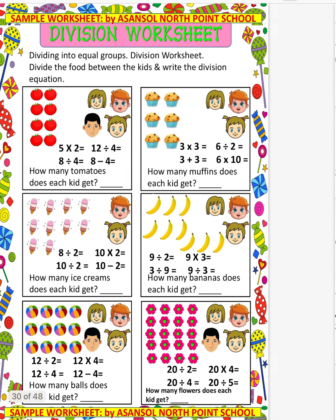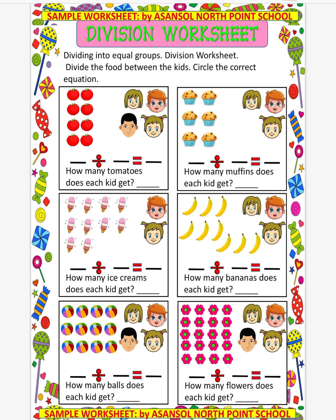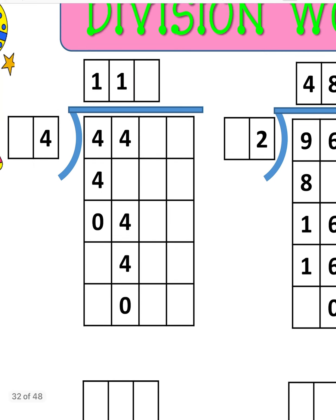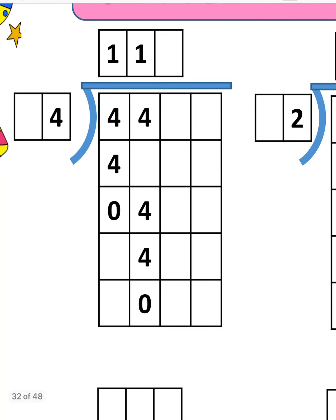Now let us discuss a few examples. We have 44 and we have to divide 44 by 4. In the table of 4, we know 4 ones are 4, so we write 4 ones are 4. We subtract 4 from 4 and get 0, then bring down the next 4. Again, 4 ones are 4. So if we divide 44 by 4, we get 11. So 11 is our answer.